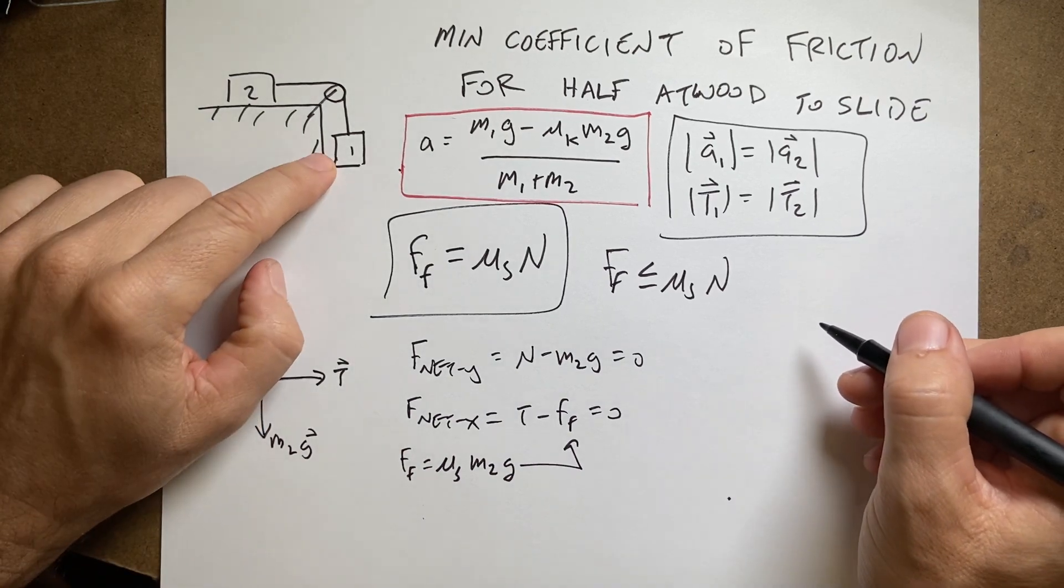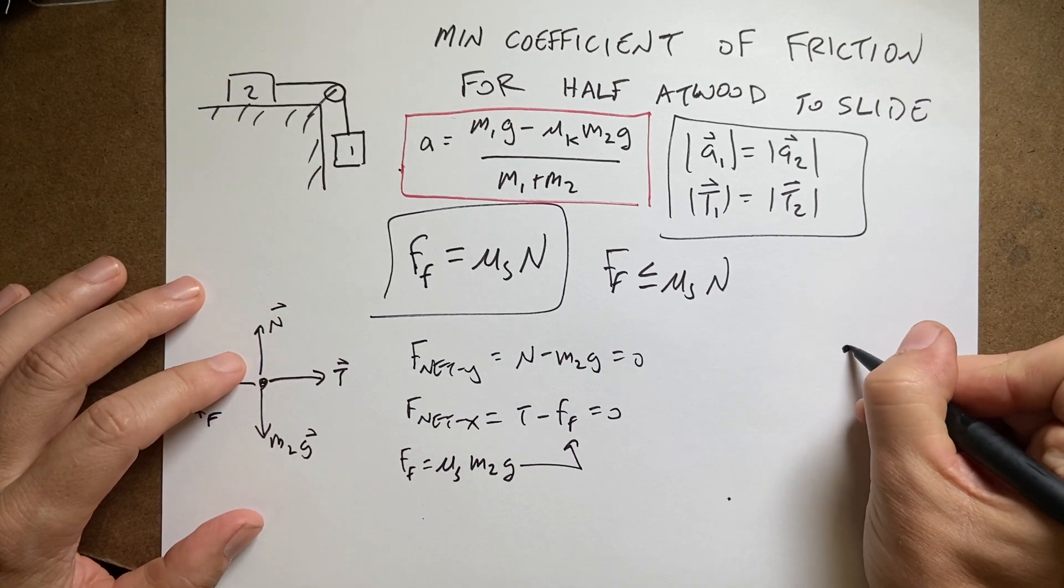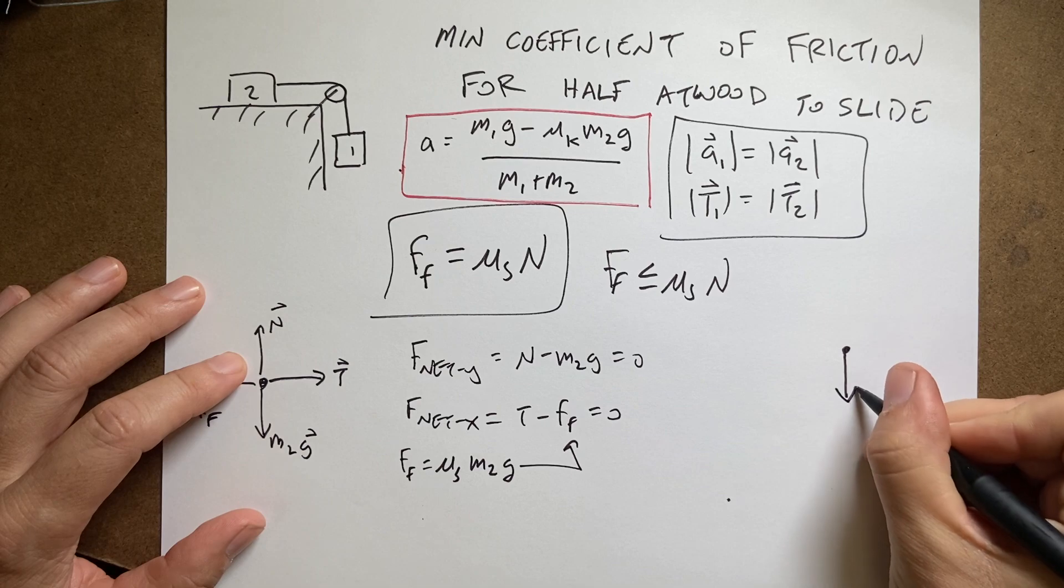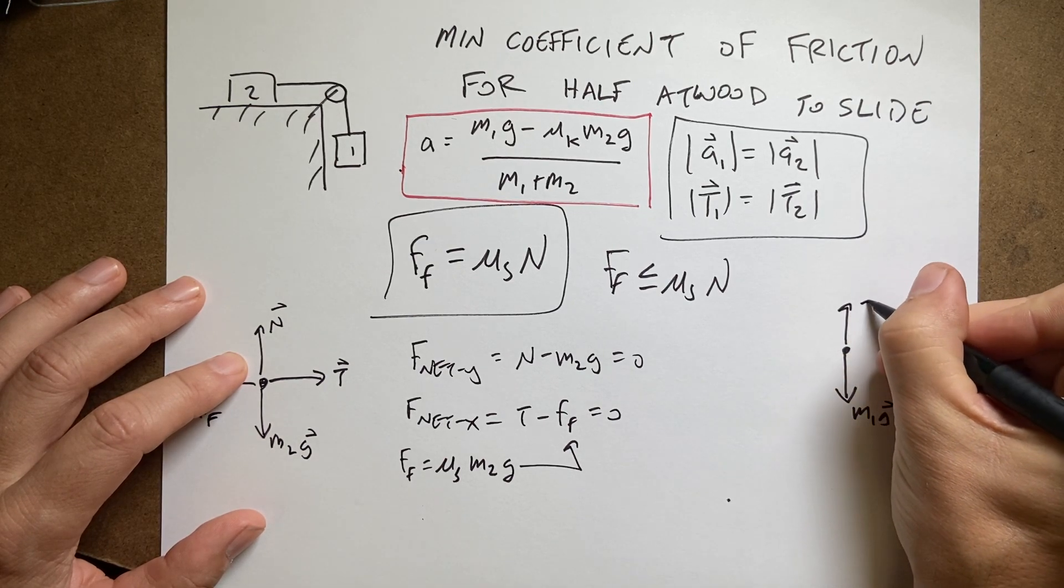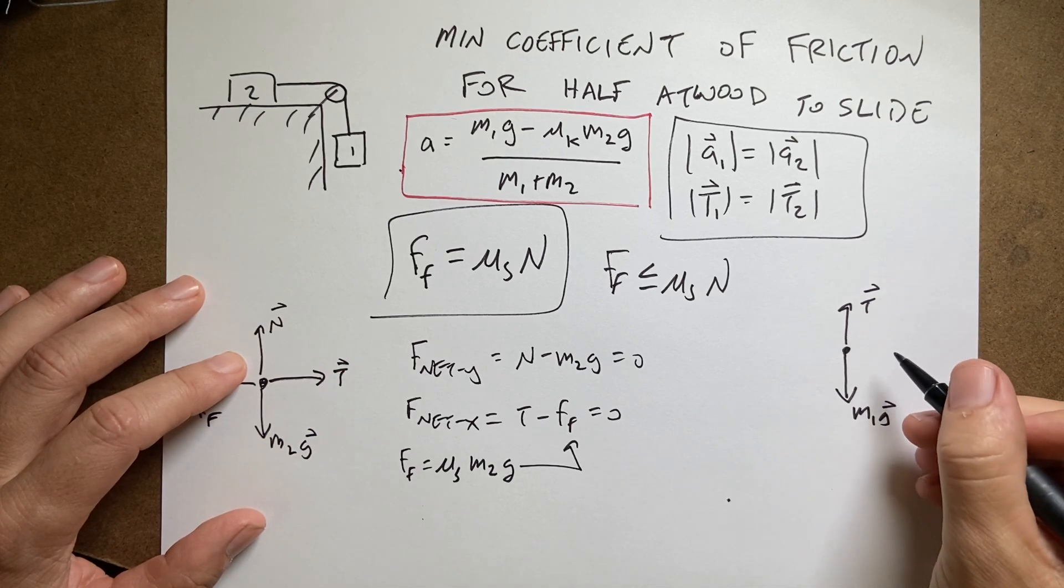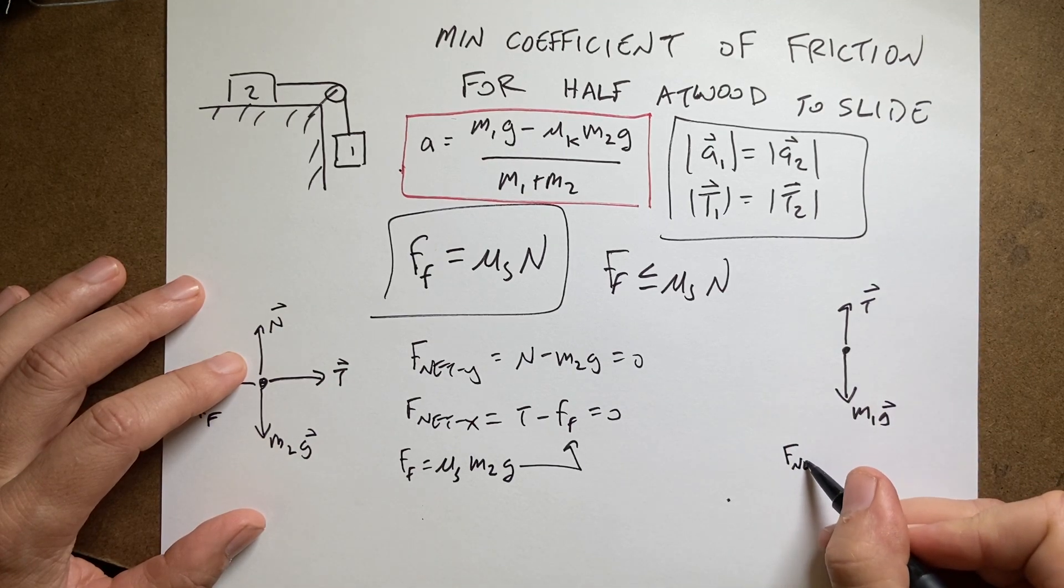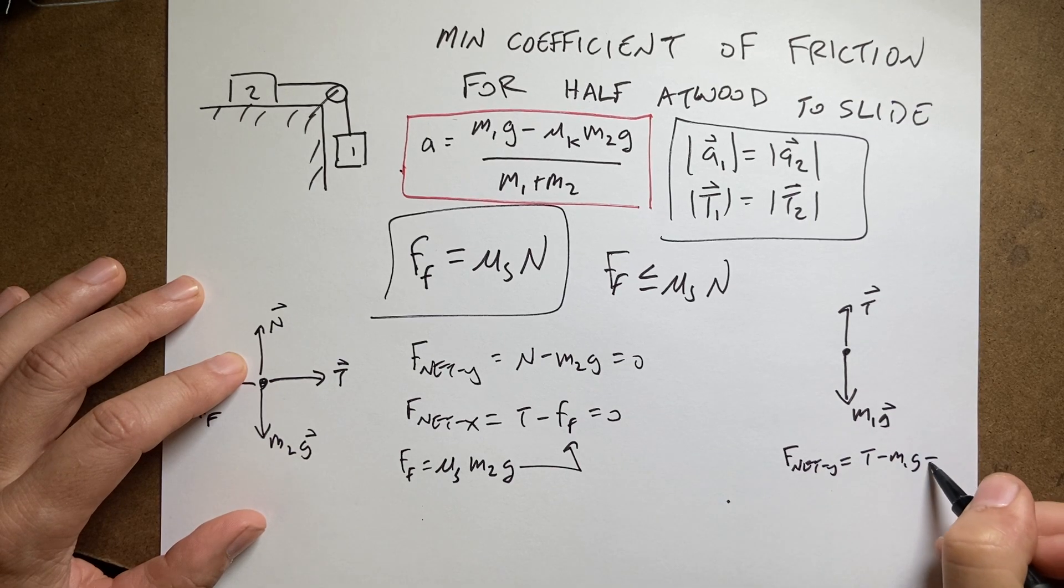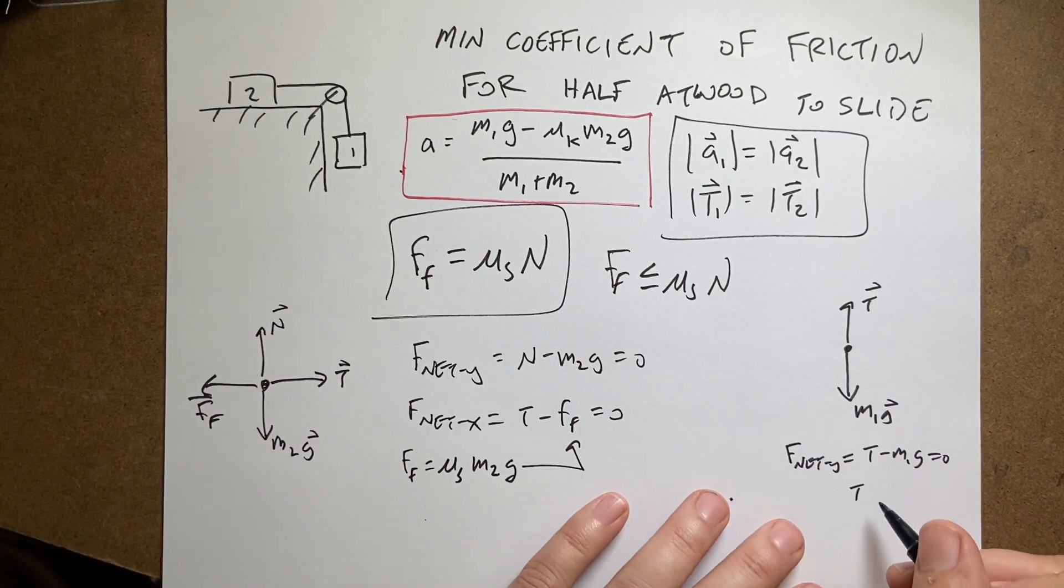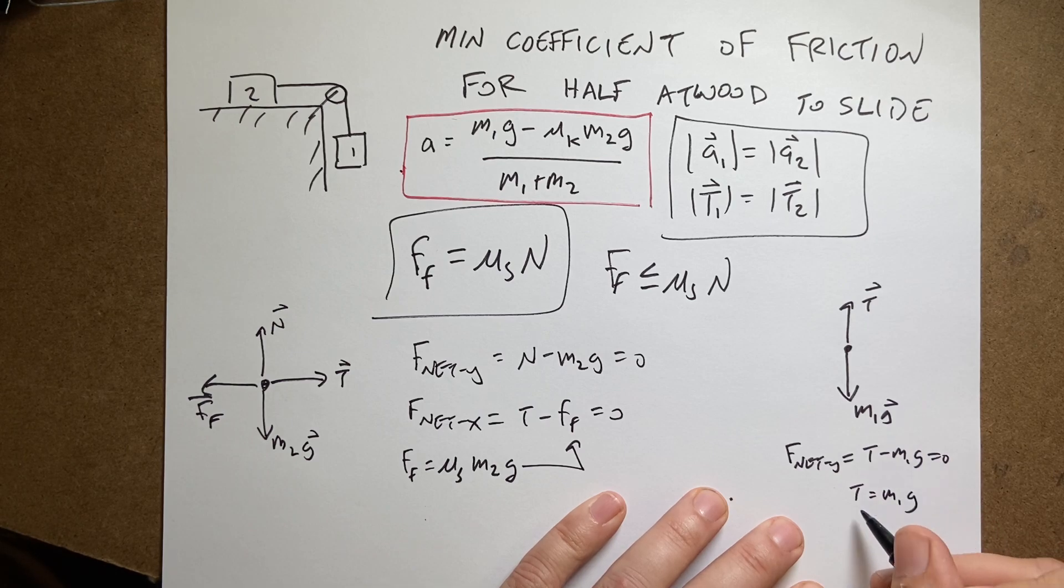I'm trying to solve for this coefficient. So for the tension, let's go over to mass one. Mass one has the gravitational force and the tension. Since the net force in the y direction is zero, T minus m1g equals zero. So T equals m1g.